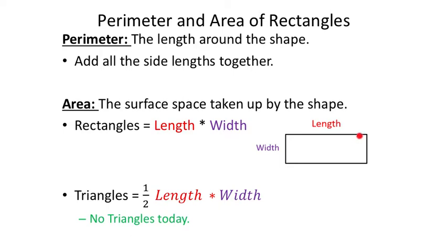The area is the surface space taken up by the shape. Think of it like coloring in a rectangle — that green space is the area. To find it, you just take the length and the width and multiply the two together. Generally, the length is the longer of the two sides, though it's not a critical distinction. Triangles are half length times width, since a triangle is essentially a rectangle cut in half.